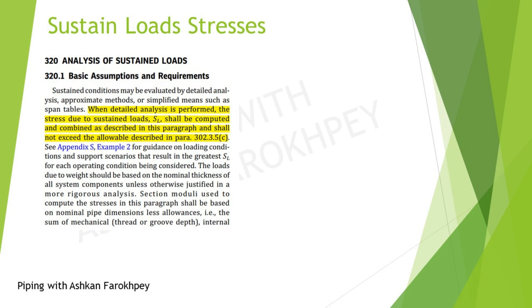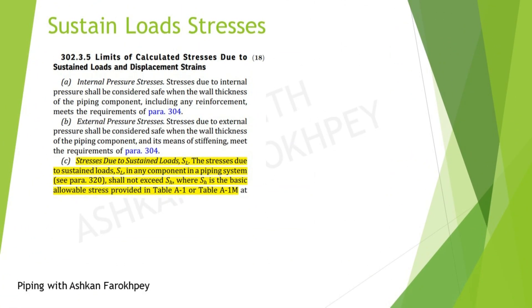The code directs us to section 302.3.5, which clarifies all concerns a designer might have. It tells us that if our piping thickness is per code requirements, we need not worry about internal and external pressures from the stress analysis perspective. Then, the code tells us to calculate sustained load stresses by SL, and if SL is higher than SC or SH, that design must be revised. In Caesar 2 modeling, load cases will appear in red if SL passes its allowable margins. We typically also set 60–70% margins to keep our system safely within design limits.